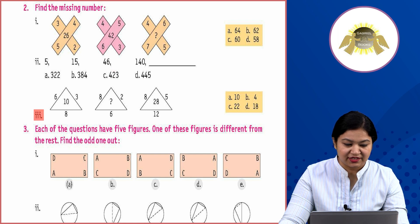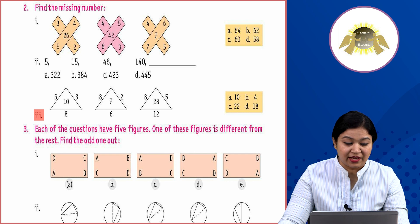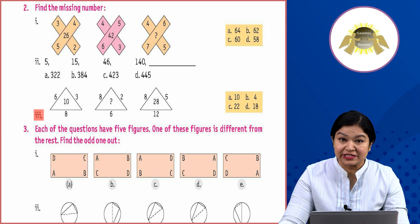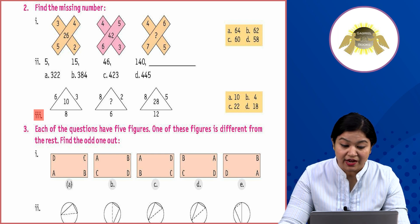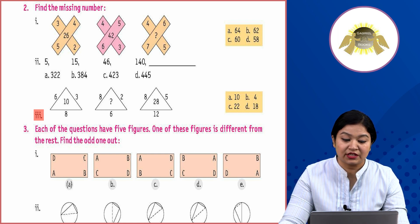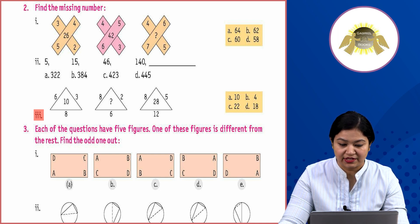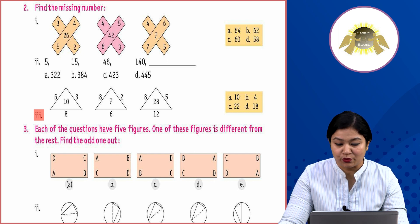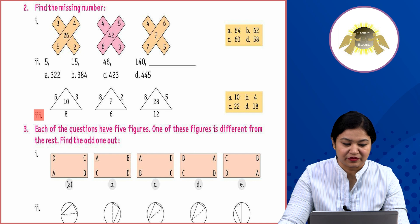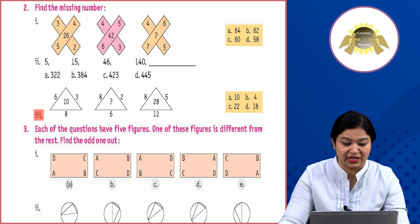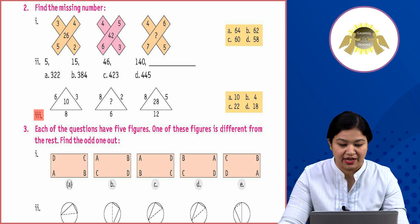Now third: you can see a triangle. Some numbers are shown outside the triangle — 6, 3, 8 — and in the middle is 10. Similarly 8, 2, 6 and we need to identify the middle number. In the third figure you can see 8, 5, 12 and the middle is given as 28. Options are A) 10, B) 4, C) 22, D) 18. Children, 6×3 is 18, minus 8 gives 10.